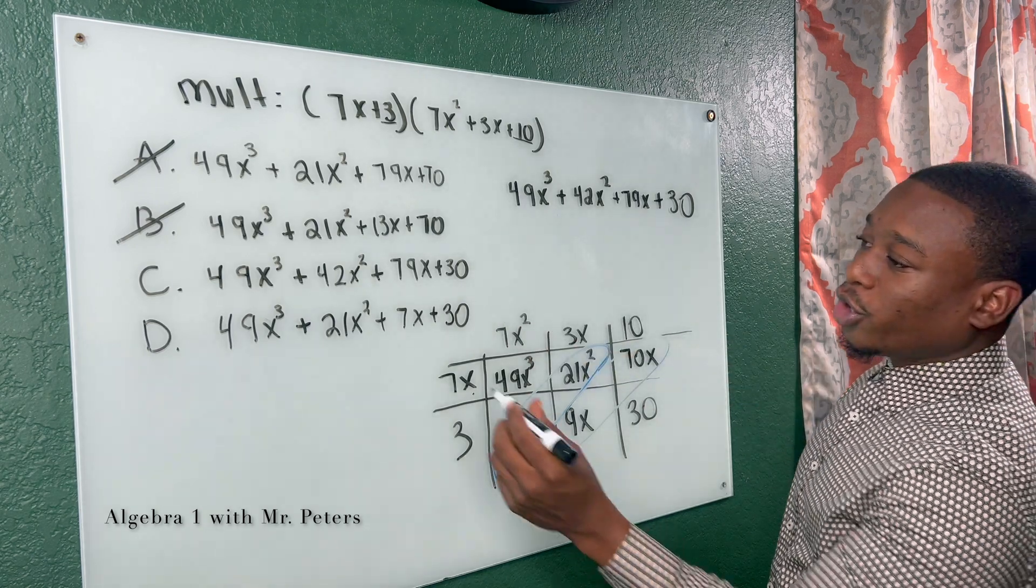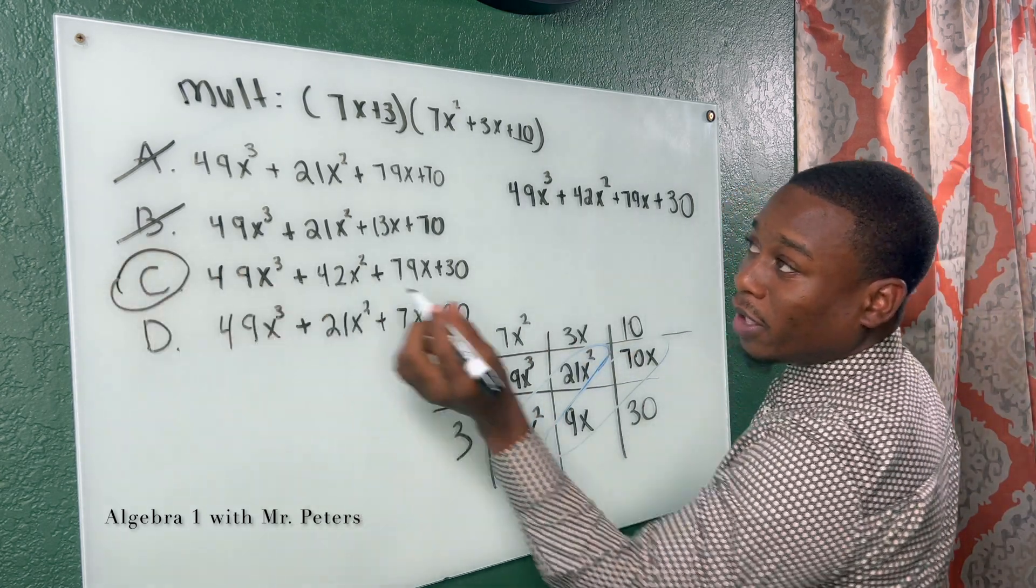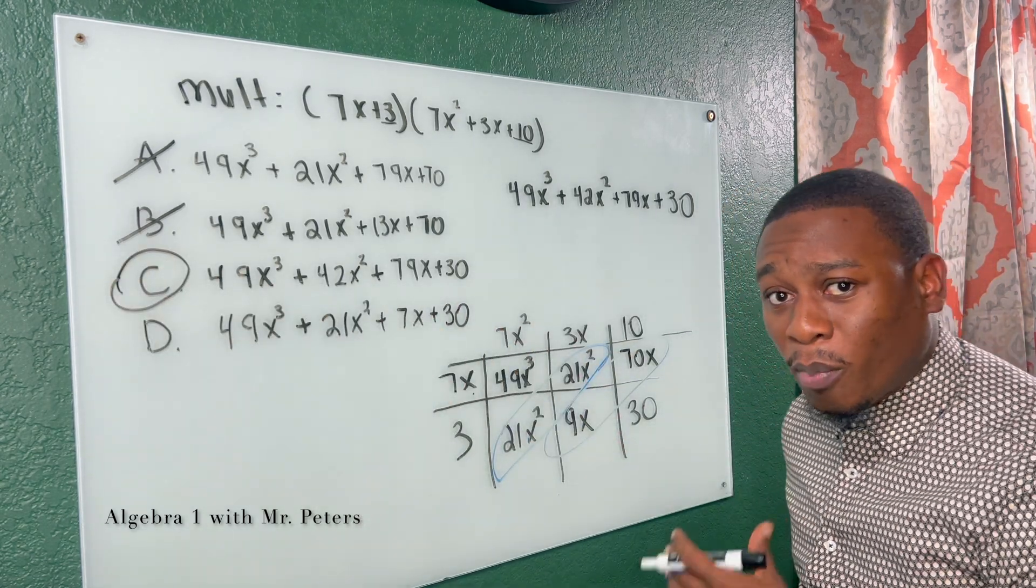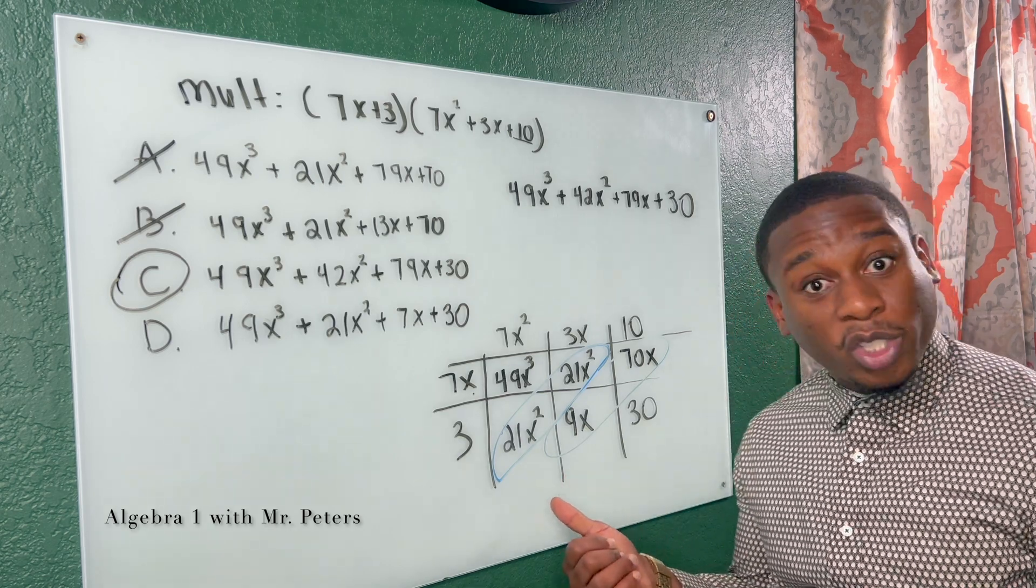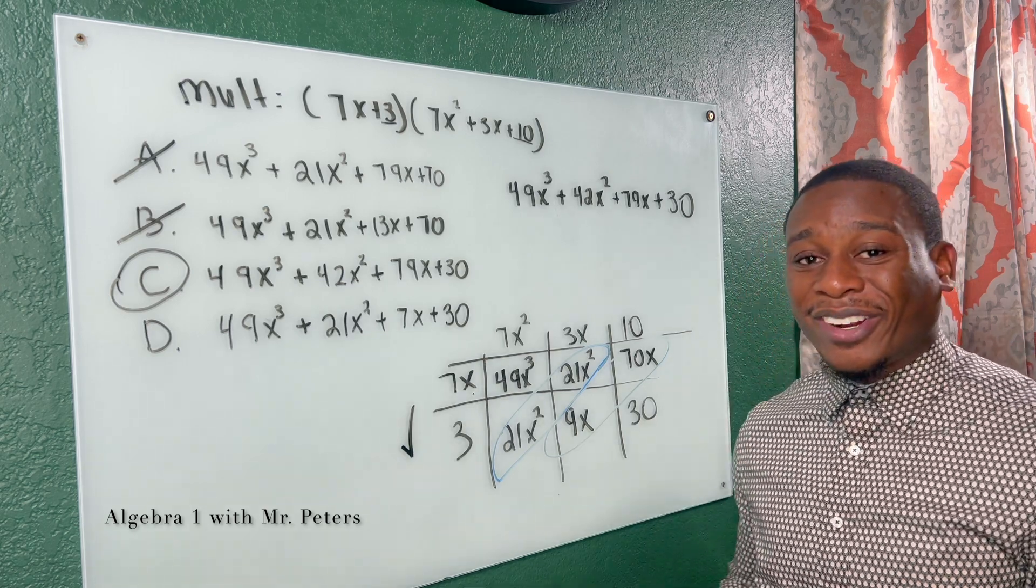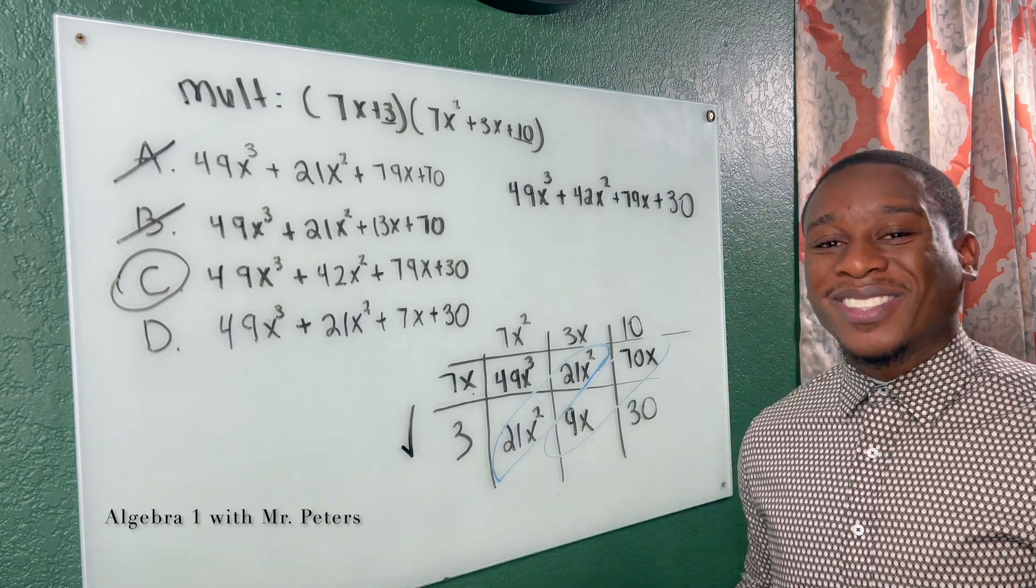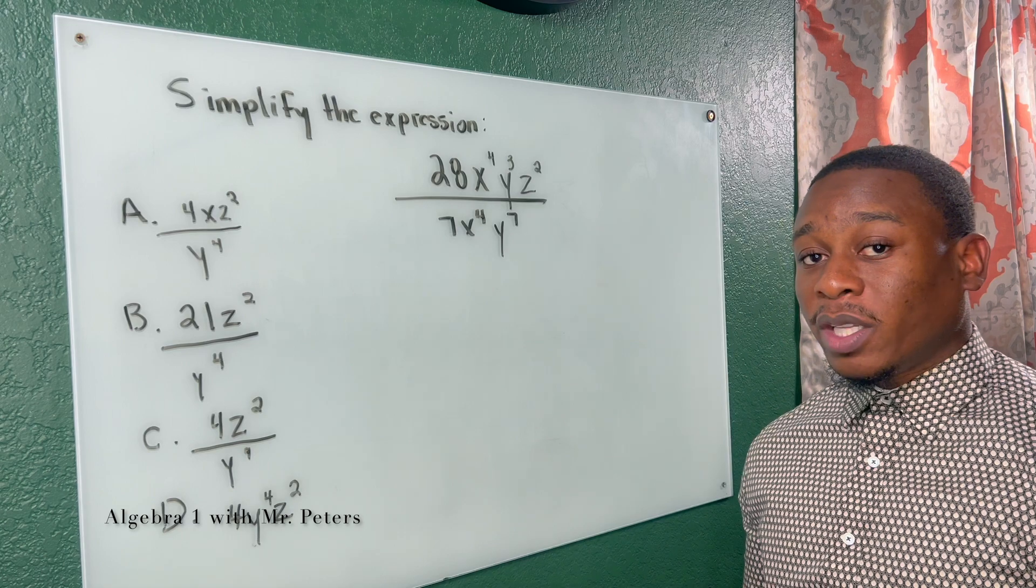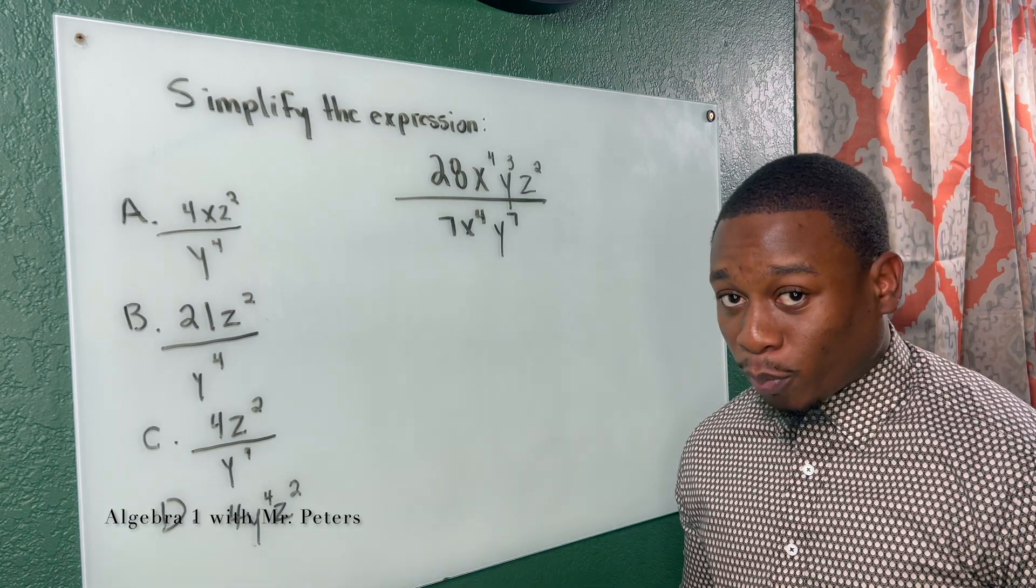And once we look at our last two answers, we know the answer choice is going to be C. So anytime you see we are multiplying polynomials, please try this box method if you struggle with foiling. It's going to make it so much easier. And with that, let's go on to the next problem. Next problem, we're dealing with simplifying expressions.